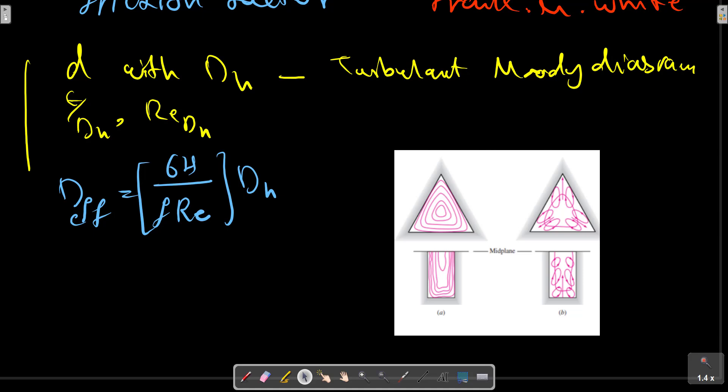Secondary flow cells drive the flow towards the corners as shown in this picture, so that axial velocity contours are similar. The wall shear is nearly constant. This is why the hydraulic diameter concept is so successful for turbulent flow. Laminar flow in a straight non-circular duct has no secondary flow.